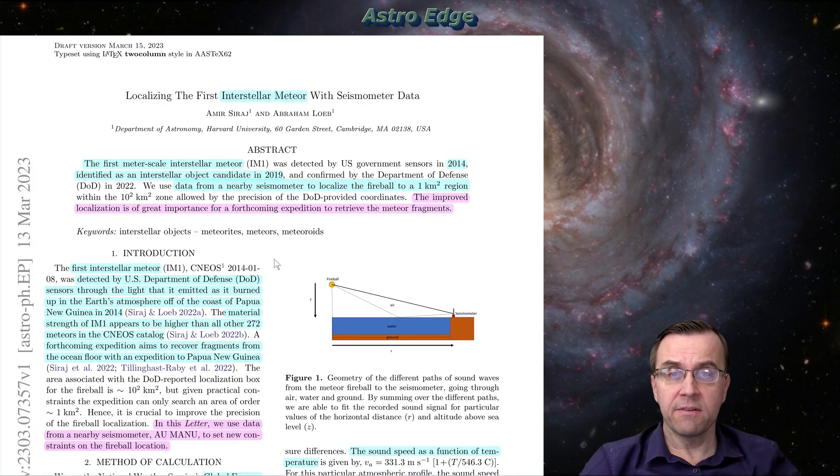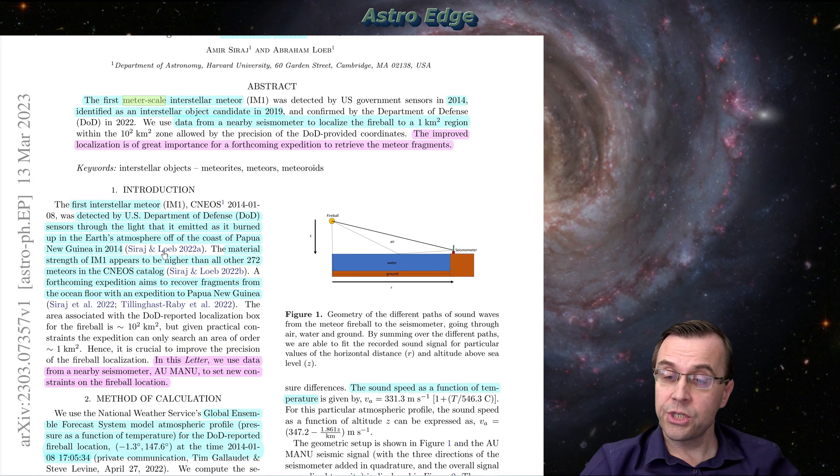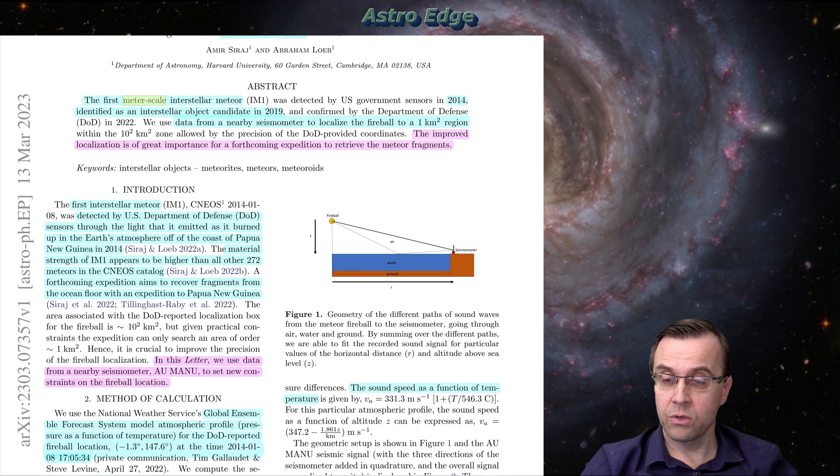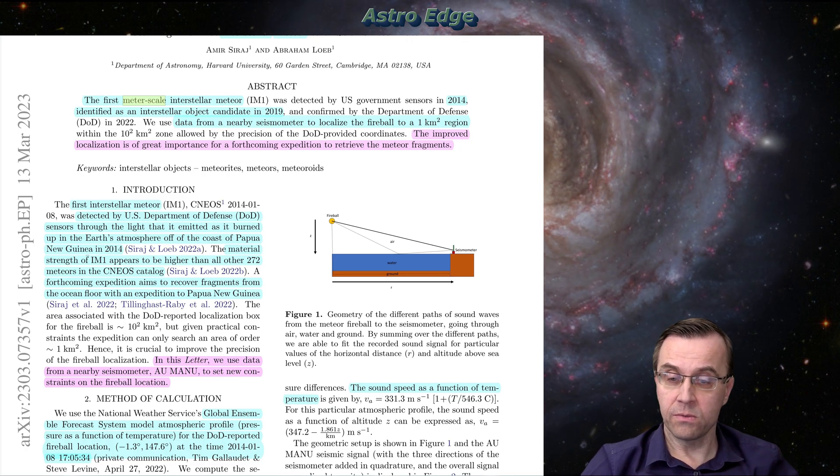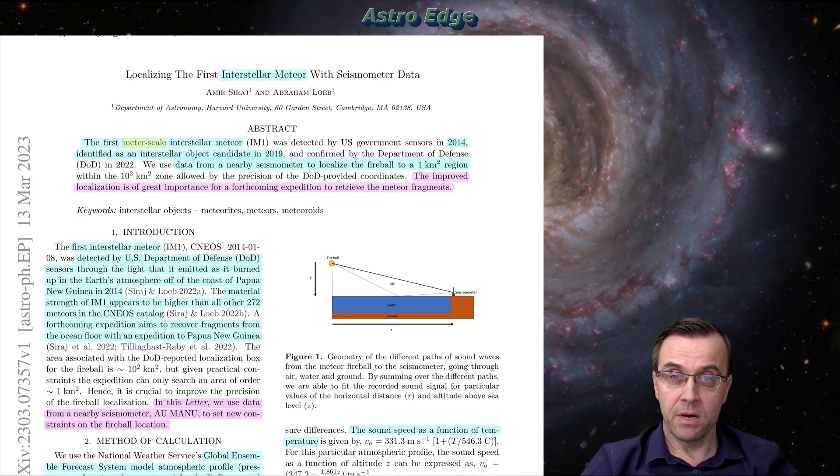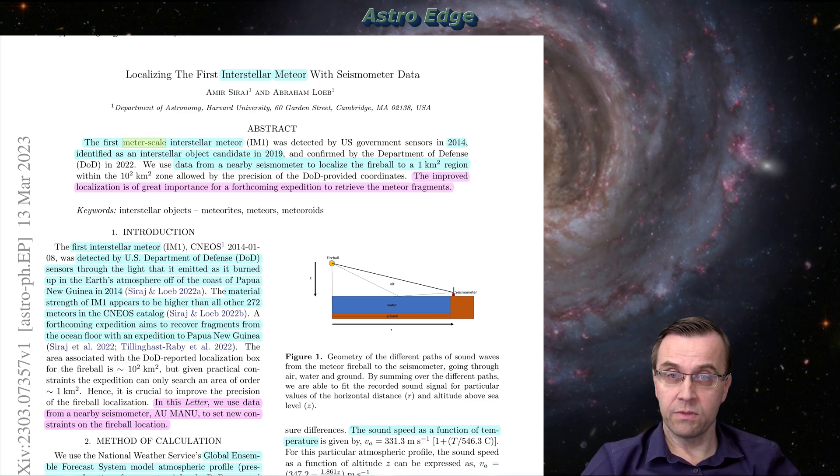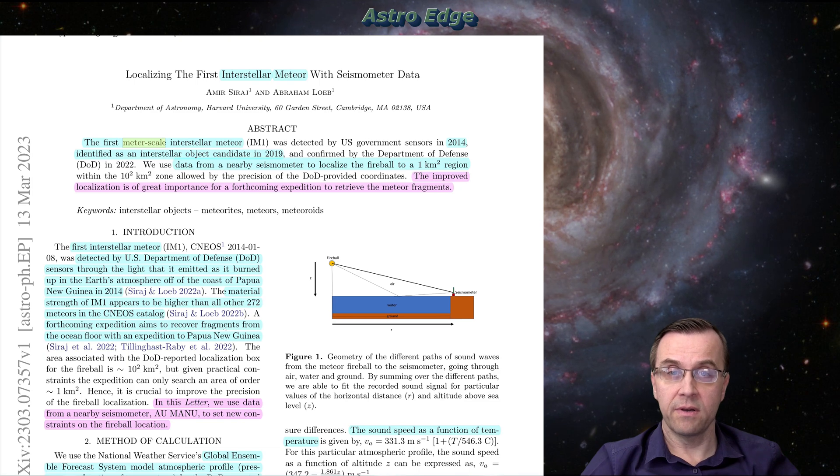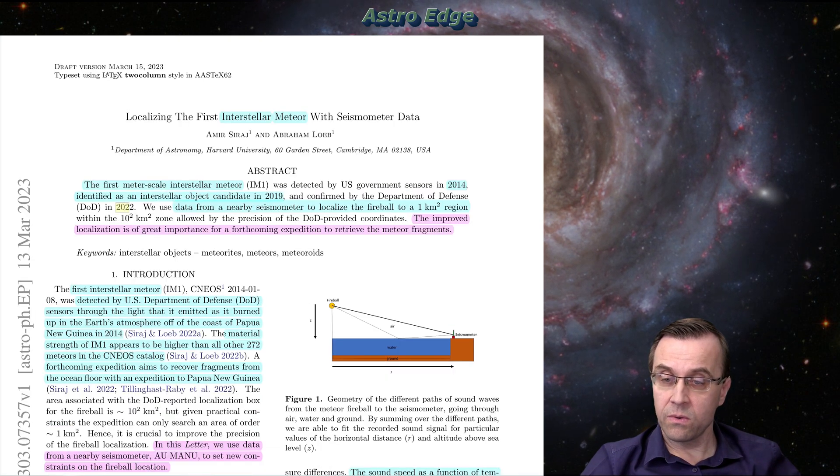The subject of this paper is a fairly large meteor, a meter scale, which exploded in the Earth's atmosphere off the coast of Papua New Guinea in 2014, resulting in a huge fireball. One very interesting point about this meteor, what makes it so special? This event, the explosion of the meteor, was classified by the Department of Defense of the United States. It was declassified only recently.